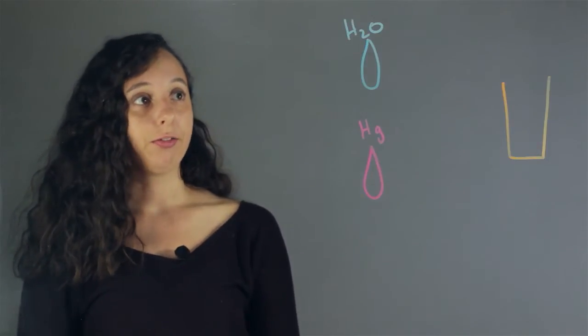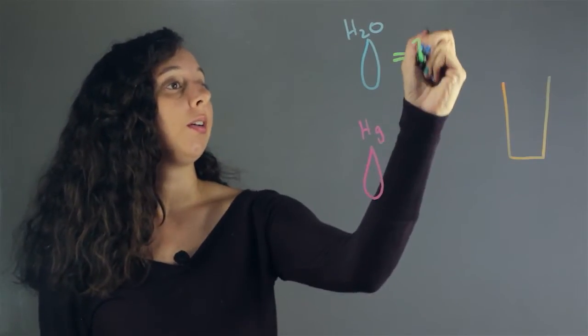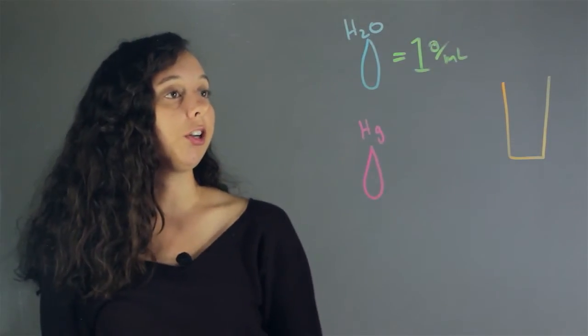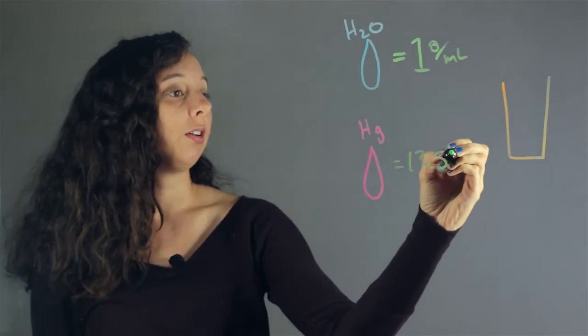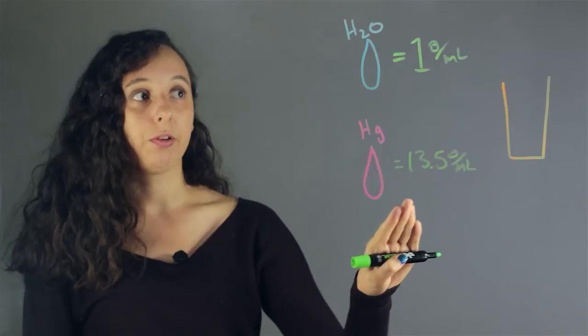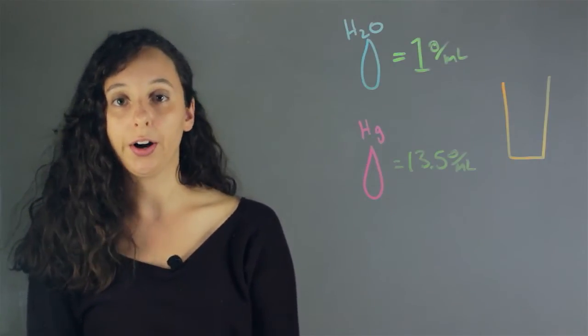So without further ado, water density is one grams per mil and mercury's density is 13.5 grams per mil. So we can tell just from these numbers, 13.5 is a lot bigger than one. Mercury is a lot more dense than water.